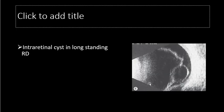We can also diagnose chronic retinal detachment, in which we see intra-retinal cysts. The retina is detached as a thick, firm layer, and within the retina there are cysts — this is a feature of long-standing retinal detachment. The black area represents sub-retinal fluid, and the dark area is the vitreous.